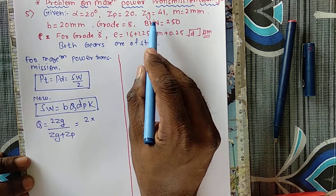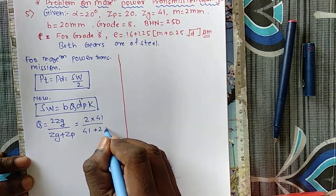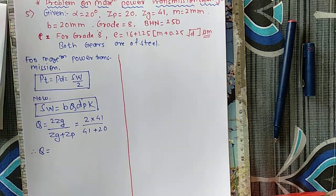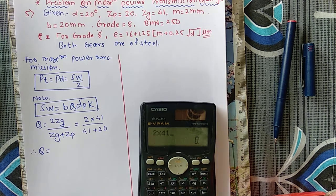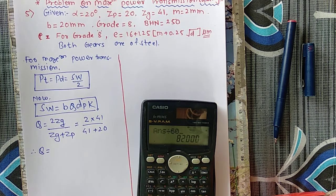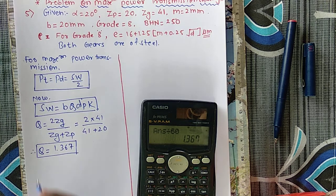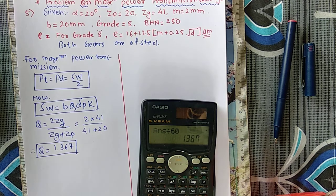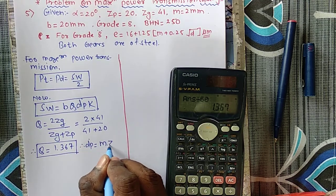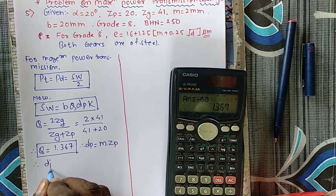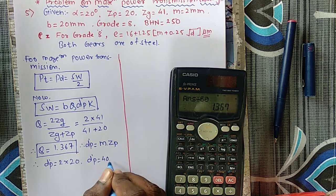Q = 2 × 41 / (41 + 20) = 82/61 = 1.367. Then pitch circle diameter of pinion: D'P = m × ZP = 2 × 20 = 40 mm.